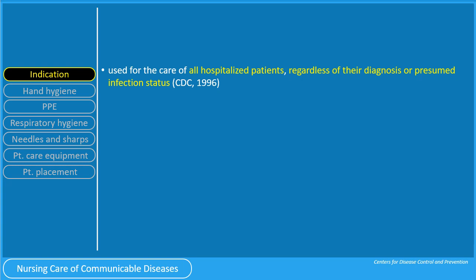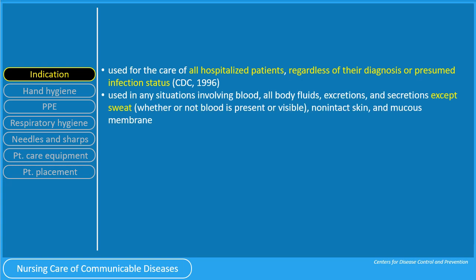When a patient comes in for care, regardless of whether that patient is known to be infectious or not, the standard precaution is used. In addition, it is used in any situation involving blood, all body fluids, excretions, and secretions except sweat, whether or not blood is present or visible, non-intact skin, and mucous membrane. It is assumed that all body fluids except sweat should be viewed as sources of infection.